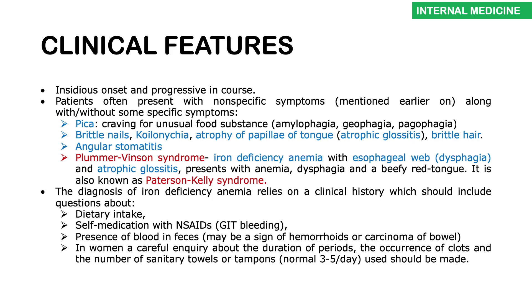Patients may have brittle nails and koilonychia — spoon-shaped nails (shown in the next slide). There may be atrophy of the tongue papillae, making the tongue smooth and enlarged — called atrophic glossitis. Brittle hair and angular stomatitis (ulcers at the corners of the mouth) may also occur. A triad of iron deficiency anemia, an esophageal web causing dysphagia, and atrophic glossitis is known as Plummer-Vinson syndrome, also called Paterson-Kelly syndrome.